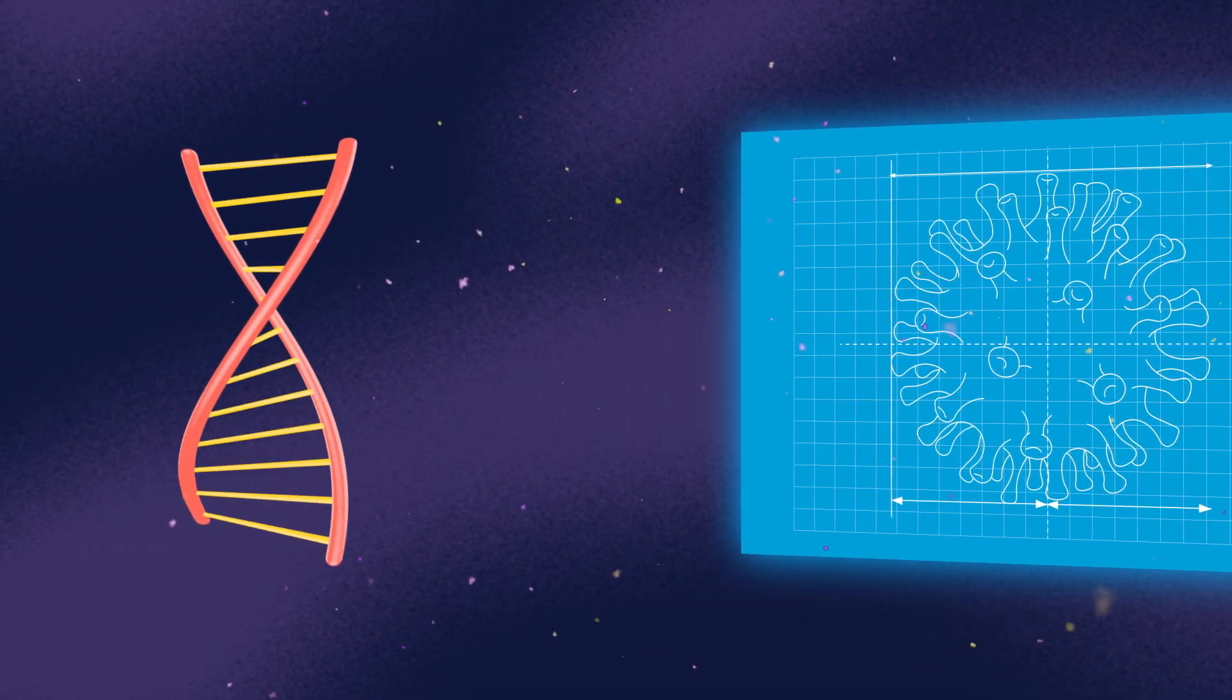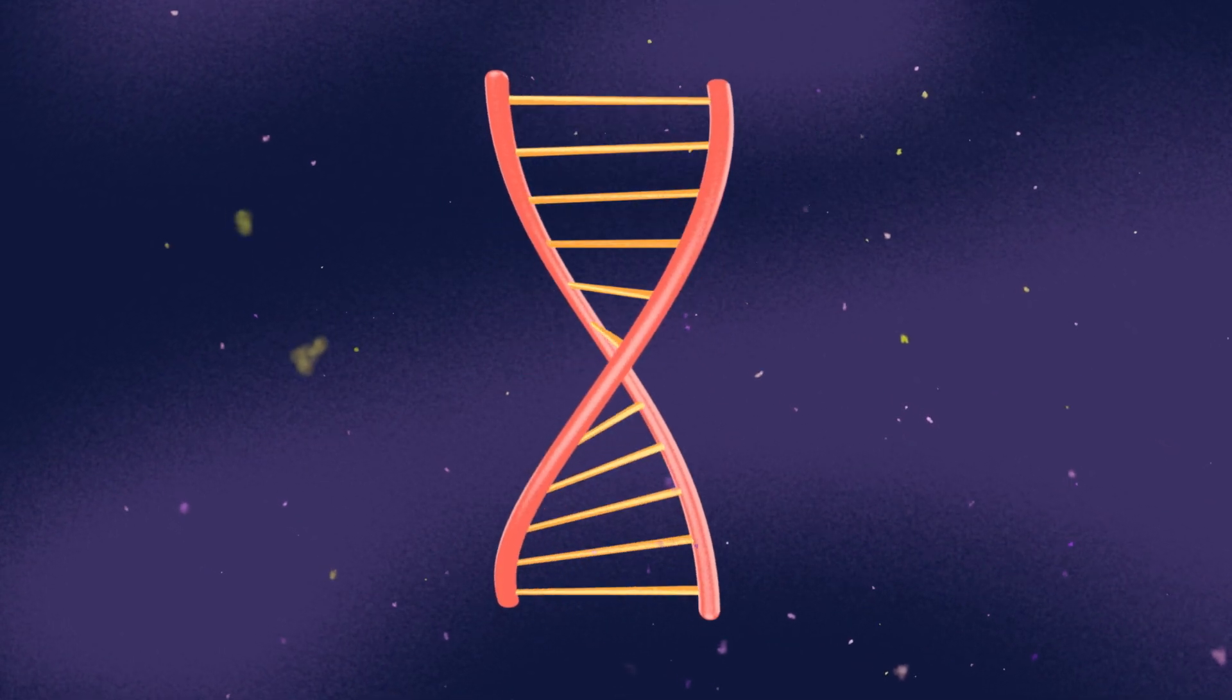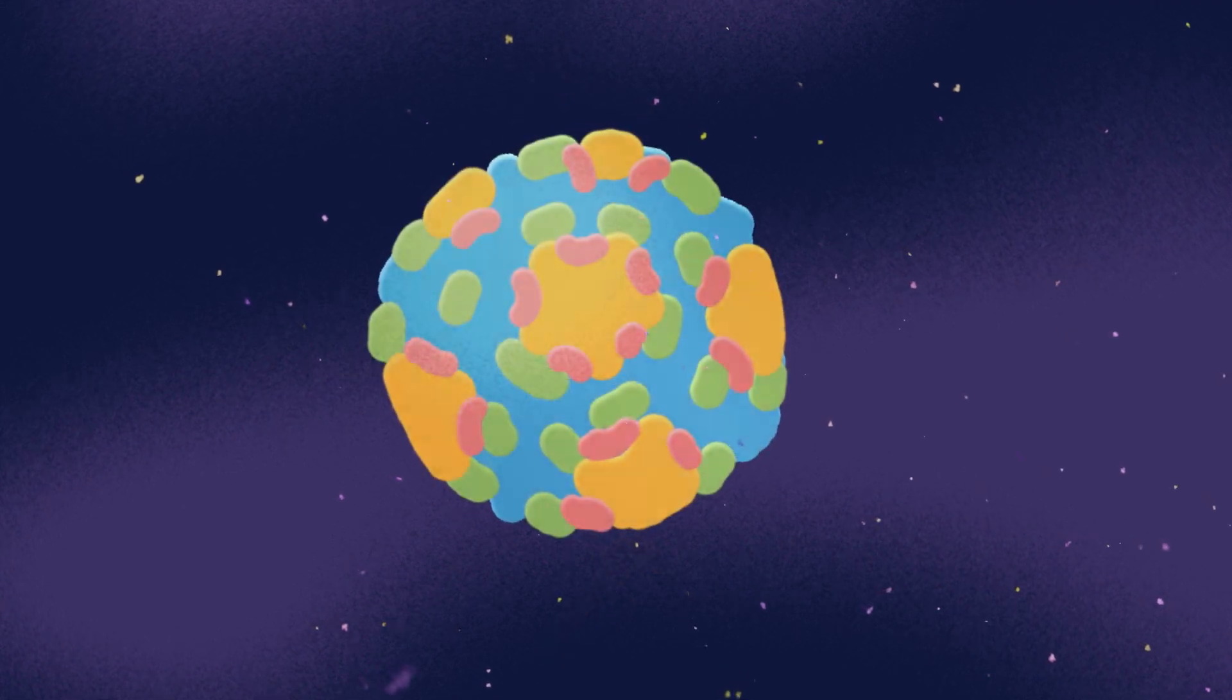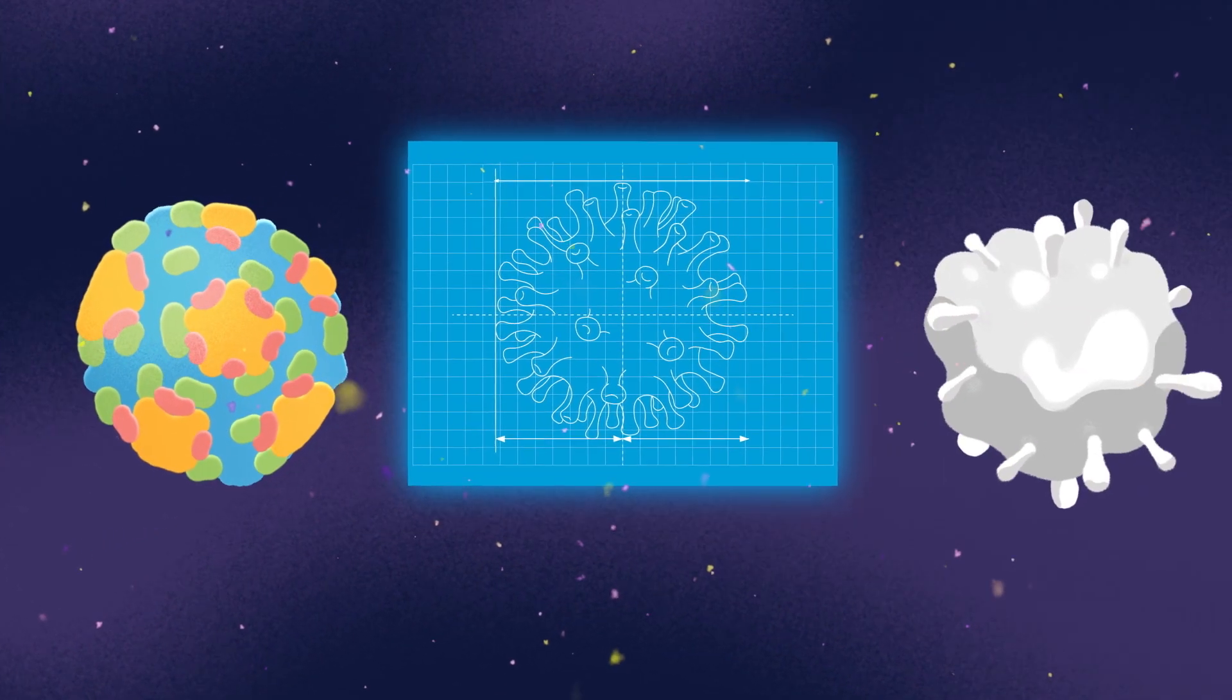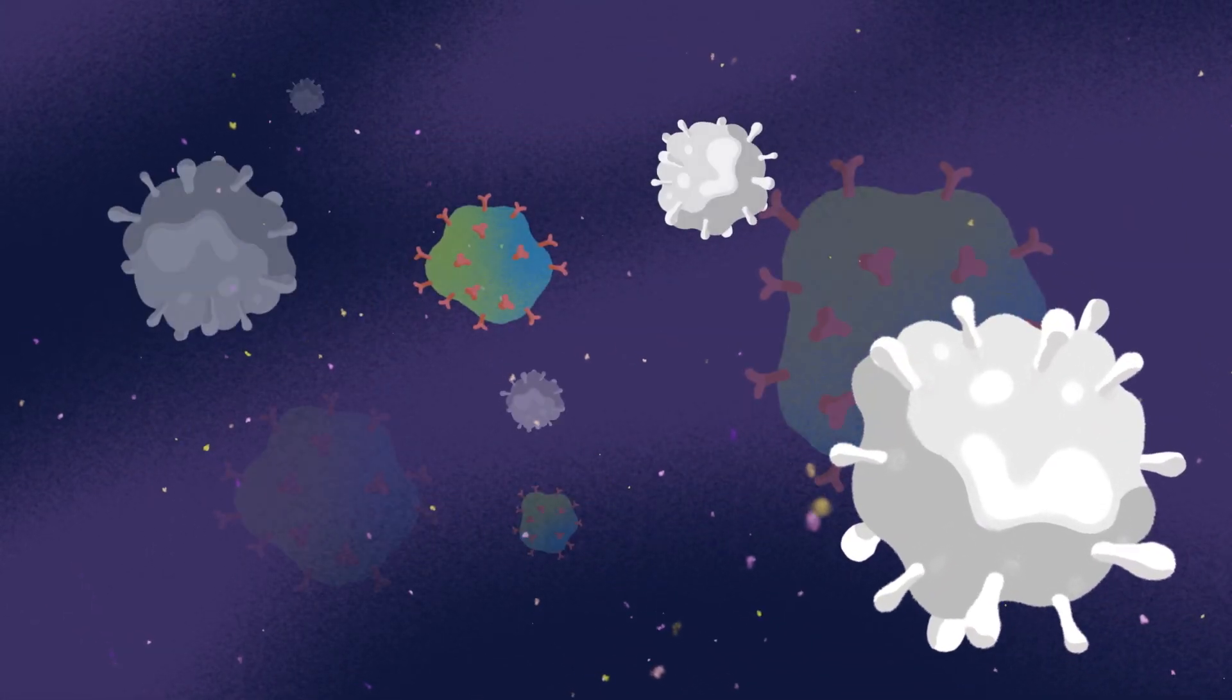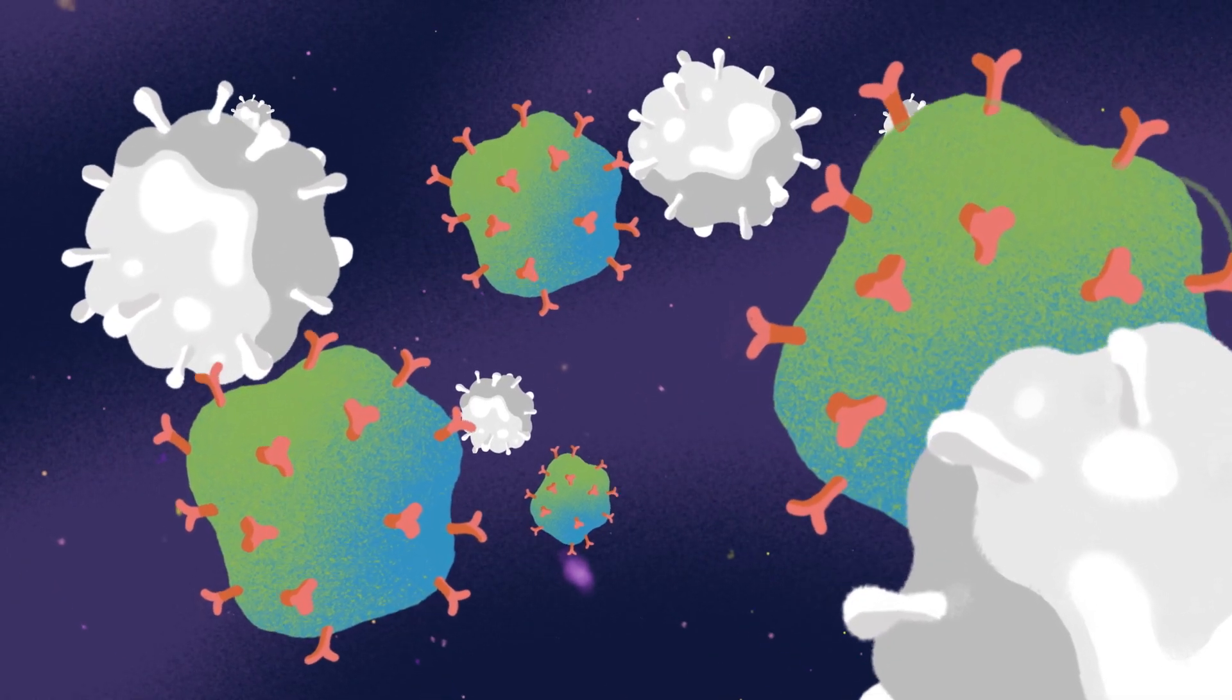The Pfizer-BioNTech and Moderna vaccines use little bits of genetic code called mRNA, while the Johnson & Johnson and AstraZeneca vaccines use a different harmless virus to deliver it. Both types of vaccines are safe and powerful ways to stop the spread of COVID-19.